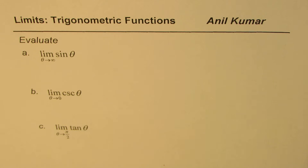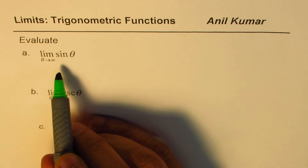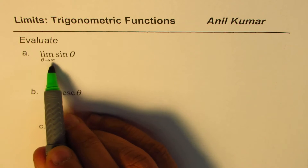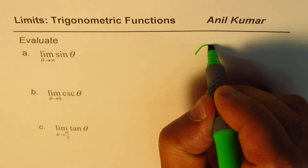In the first set, we discussed the limit for trigonometric basic ratios at a finite point. Now let's see these limits. When we talk about the limit when theta approaches infinity, let's look into the sine wave first.